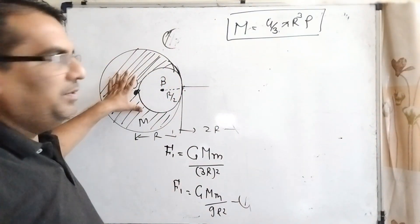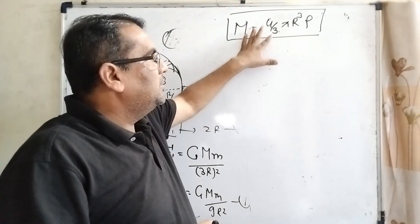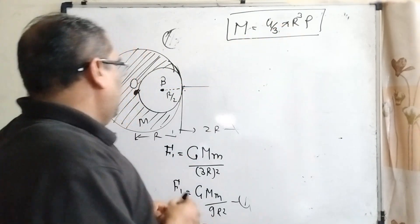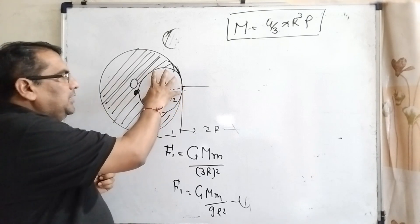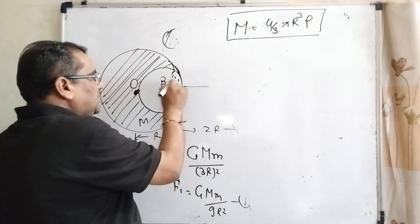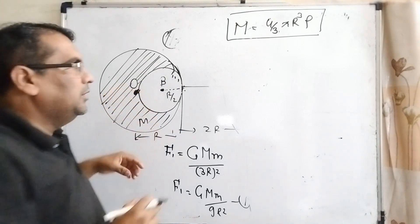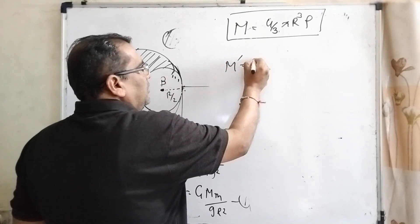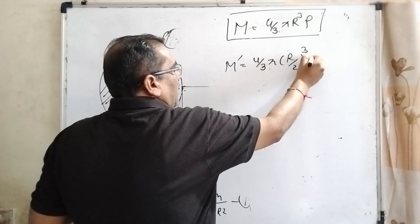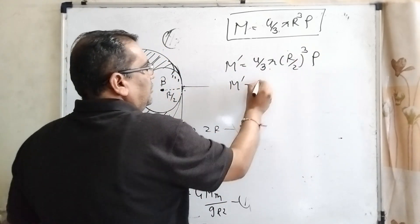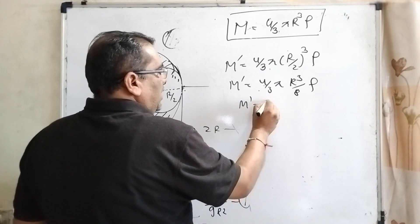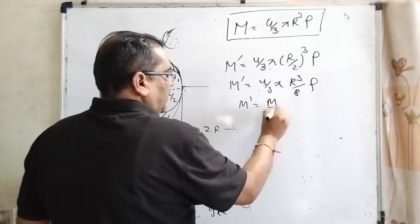Here, the mass of the big sphere is M, and what is the formula of mass? Volume into density. The density will be rho, 4 by 3 pi R cube and rho. If we have taken out this sphere of radius R by 2, now the mass of this solid of R by 2 which we have taken out, then what is the mass? M dash equal to 4 by 3 pi R by 2 cube and rho. Then, M dash equal to 4 by 3 pi R cube by 8 and rho. Then, you can see that its mass has become M by 8.